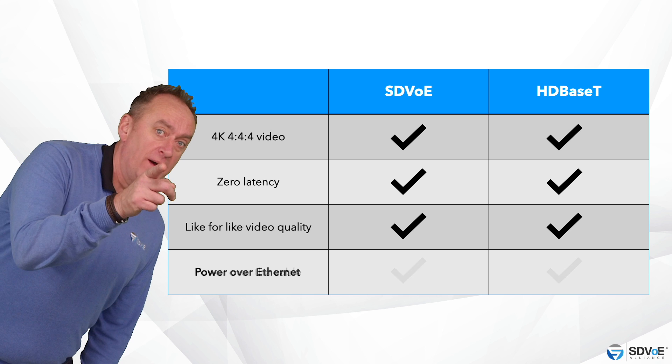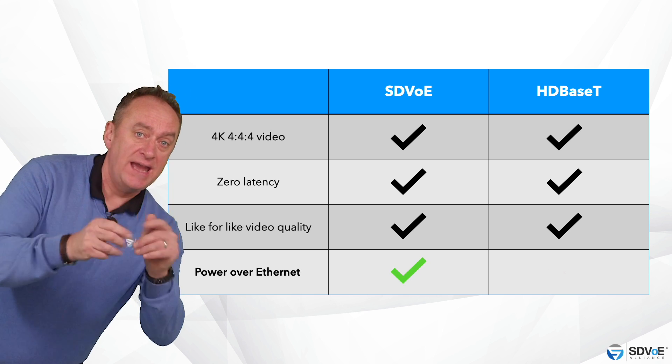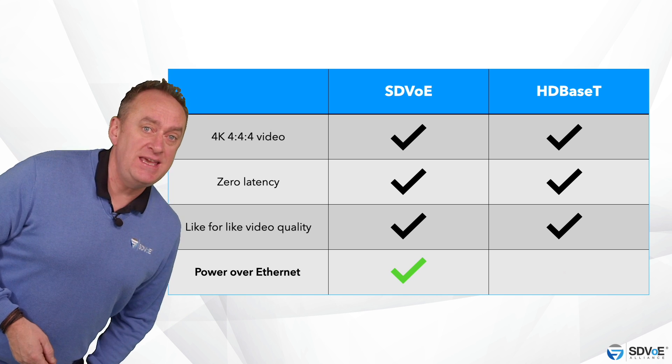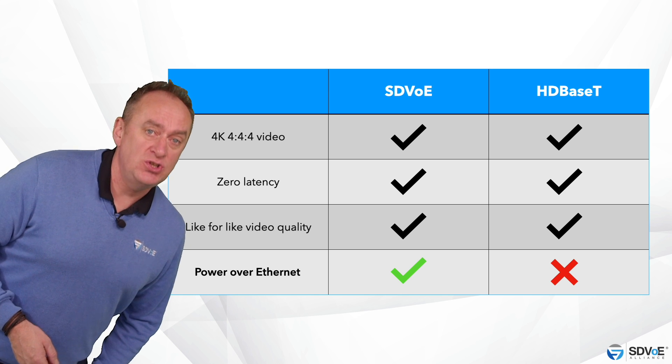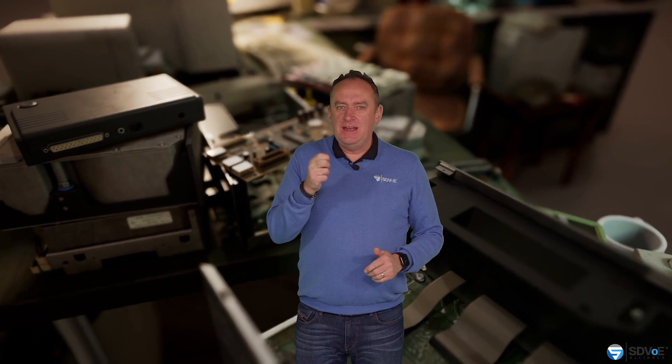Remember, SDVoE uses Power over Ethernet. HDBaseT doesn't, because it doesn't use Ethernet. HDBaseT, the older proprietary technology, is really built for point-to-point distribution and it demands piles of custom, power-hungry electronics to create switchable distribution systems.